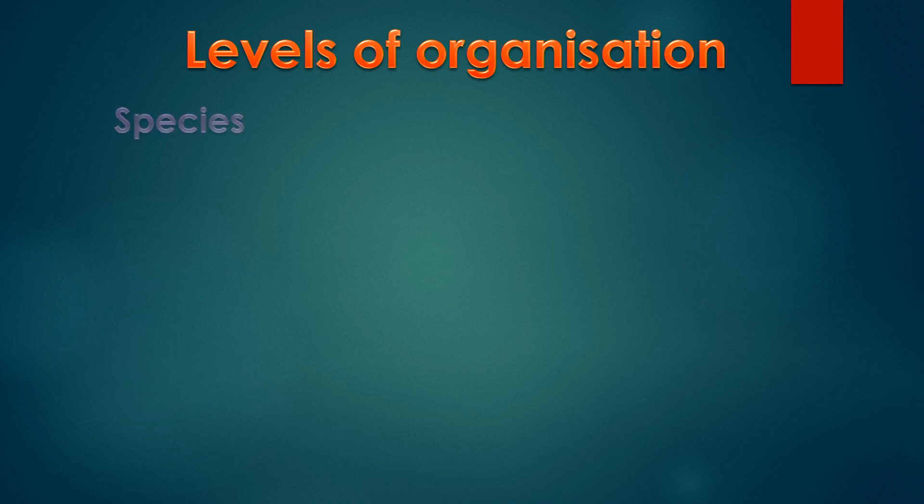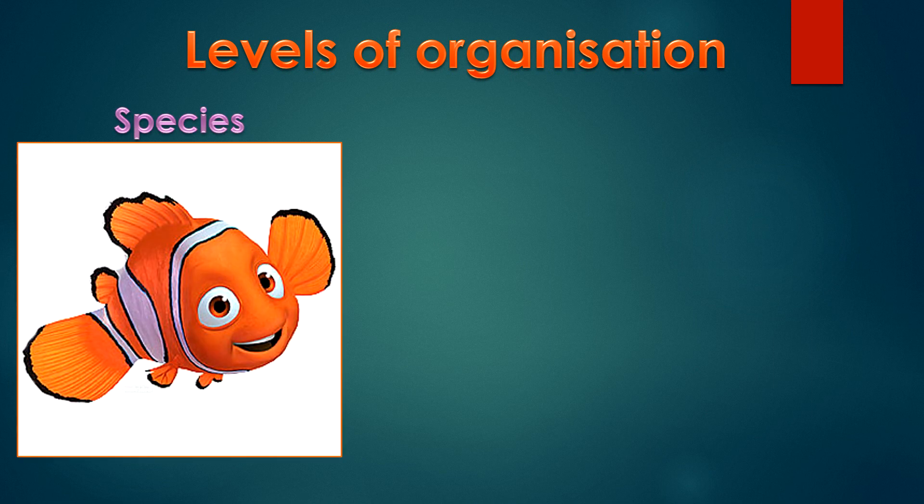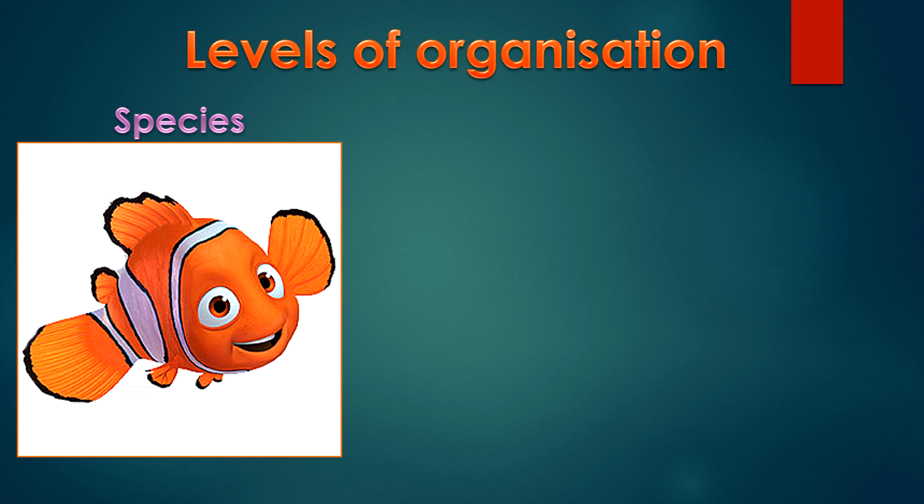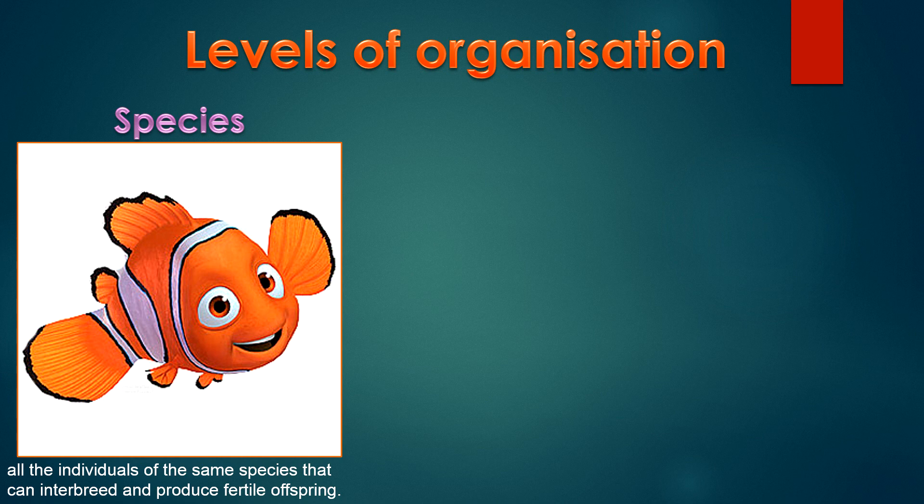We're now going to look at the levels of organisation and use Finding Nemo to help us understand it. The most specific level of organisation is species. An example of this is Nemo and Marlin. They are both the clownfish species. Species are all the individuals that can interbreed and produce fertile offspring.